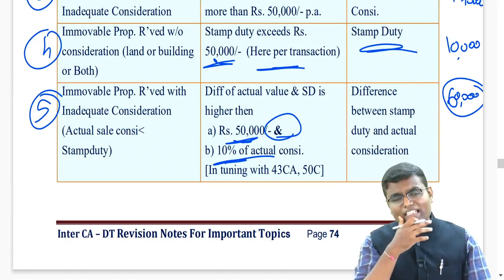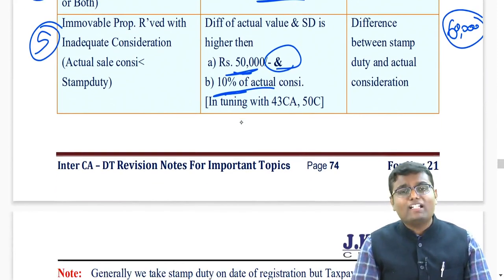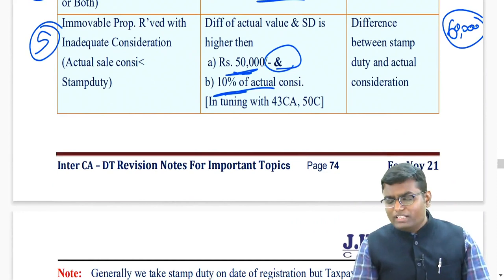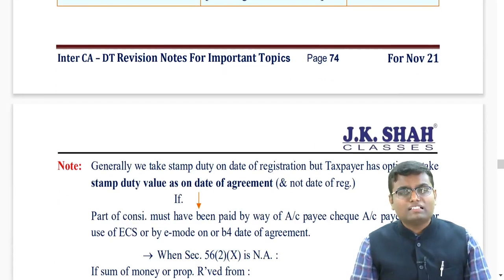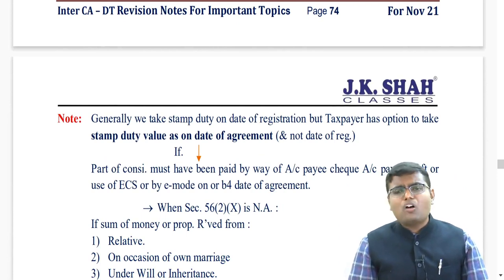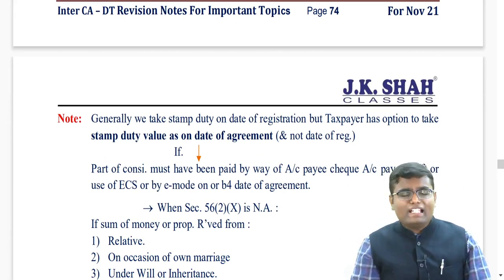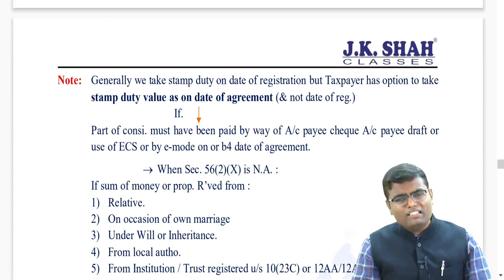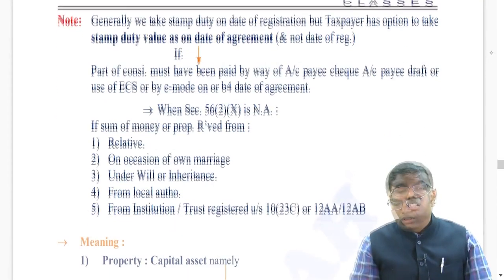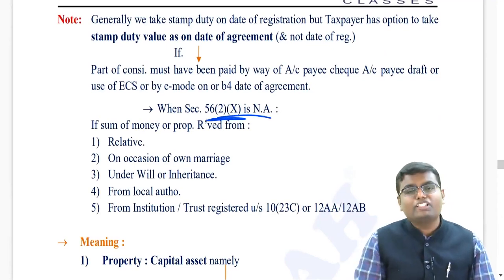Now the question arises: stamp duty should be taken on which date? It should be taken from the date of registration. But the same rule applies - if on the date of agreement you have paid at least some of the consideration through account payee cheque, account payee draft, ECS or other electronic mode, then we will take stamp duty on the date of agreement. So the option is available.